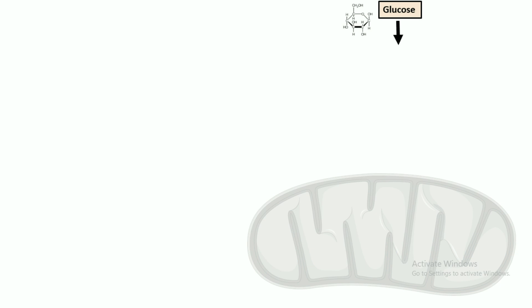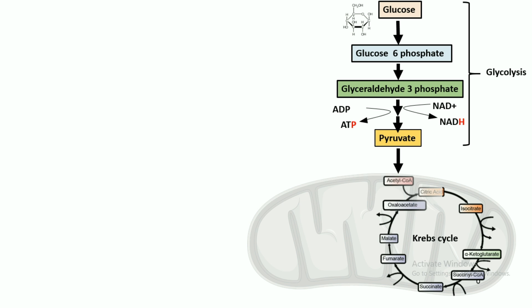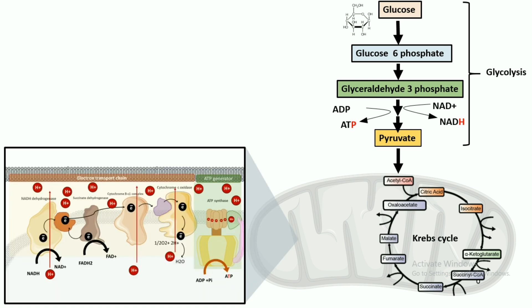We know these enzymes are used in the glycolytic pathway. To refresh our memory: glucose gets converted to pyruvate in this process, and that pyruvate is eventually used in the TCA cycle. By the way, glycolysis generates ATP, which is the energy currency of the cell, and ultimately in the electron transport chain more ATP is generated.